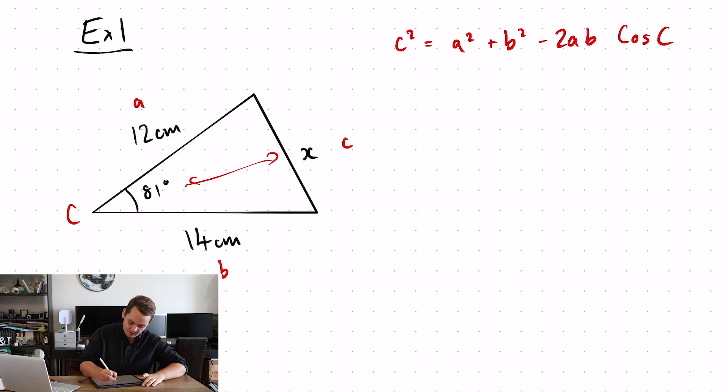So my C is X, so X squared. My A is 12, 12 squared. My B is 14, 14 squared minus 2 lots of 12 and 14 cos of my capital C which is 81.